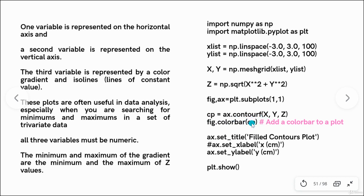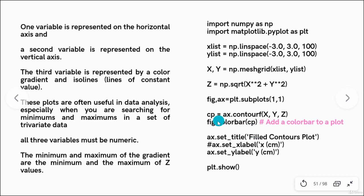Then we want to draw a contour plot. So cp equals contourf — or you can simply say ax.contourf without assigning it to cp. Contourf means it will give a filled contour between x, y which are independent variables and z which is dependent. Then we can customize it by adding a color bar using plt.colorbar, passing cp since we used cp equals. Setting the title, setting the x label, setting the y label, and then finally plt.show.